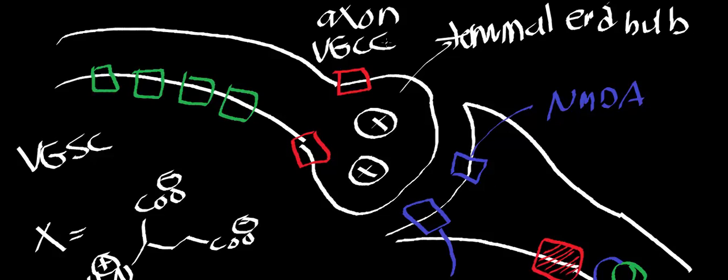Again, this is not a physiology class, but you have to understand a little bit about the action potential to really understand what's happening. So we're assuming that we have an action potential that's moving along the axon. Now, what is important to understand is that these voltage-gated sodium channels have multiple subunits that come together, but each one of the subunits has six domains.